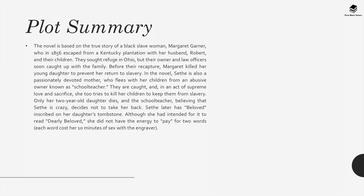In the novel, Sethe is also a passionately devoted mother who flees with her children from an abusive owner known as schoolteacher. They are caught and in an act of supreme love and sacrifice, she too tries to kill her children to keep them from slavery. Only her two-year-old daughter dies, and schoolteacher, believing that Sethe is crazy, decides not to take her back. Sethe later has 'Beloved' inscribed on her daughter's tombstone, though she had intended it to read 'Dearly Beloved' — she did not have the energy to pay for two words, as each word cost her ten minutes of sex with the engraver.